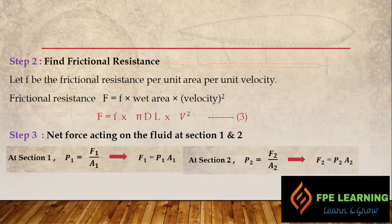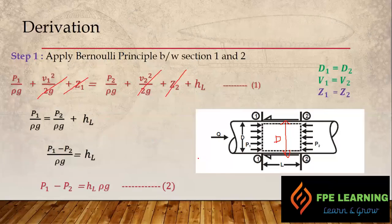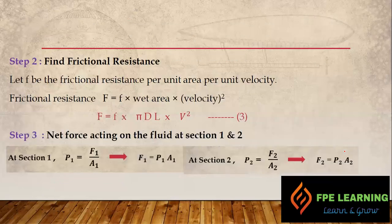Step 3: Determine the net force acting on the fluid at sections 1 and 2. Pressure equals force over area, so: force at section 1 = P1 · A1, and force at section 2 = P2 · A2. We will use these pressure-force relationships in Step 4.